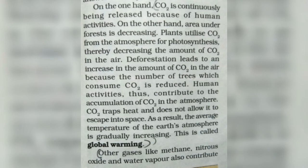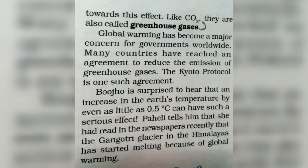Carbon dioxide, methane, and nitrous oxide are gases that trap a lot of heat on our earth. This heat is required for the growth of plants, but it is increasing more than needed. Global warming has become a major concern for governments worldwide, and they have started various steps to reduce it.